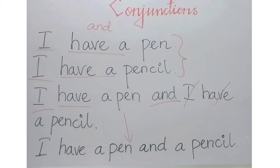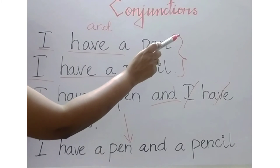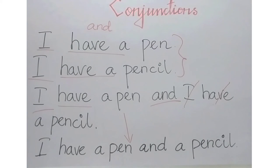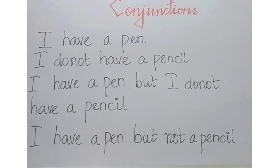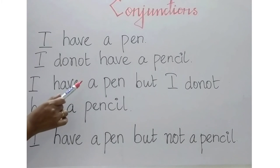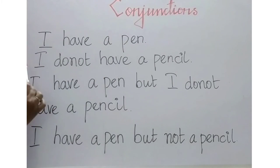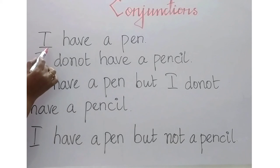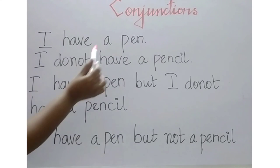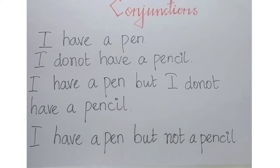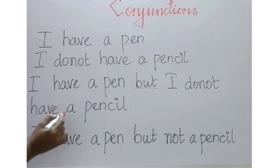So here we learn that when we use the word 'and,' we remove the words that are repeated. Now let us have a look at one example for the conjunction 'but.' Here I have the same two sentences but I have tweaked the second sentence a little bit: 'I have a pen. I do not have a pencil.' Here the ideas are completely opposite to each other — I have a pen, but there is no pencil — which means it is opposite to the first sentence. So we use the conjunction 'but' to join these two sentences: I have a pen but I do not have a pencil.